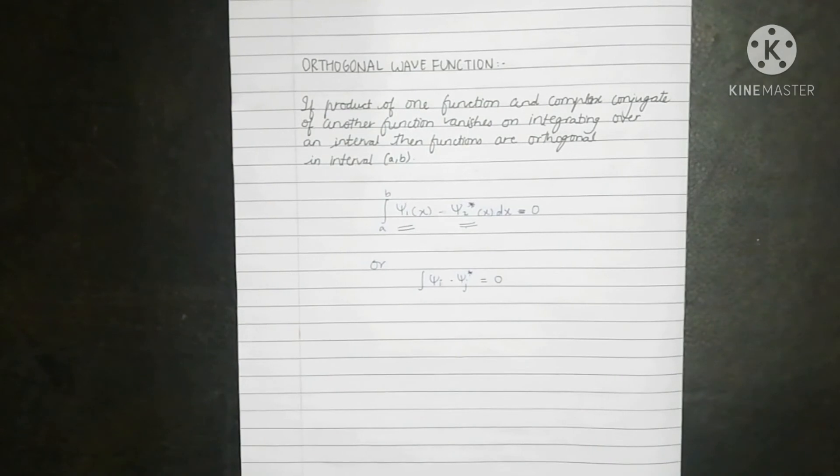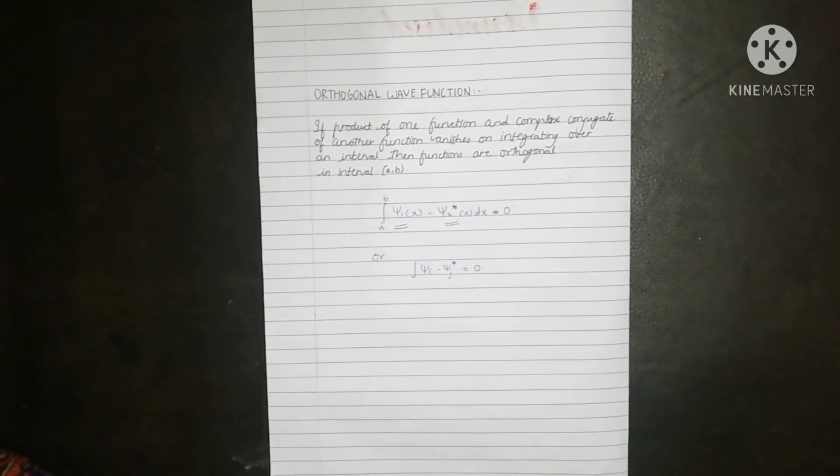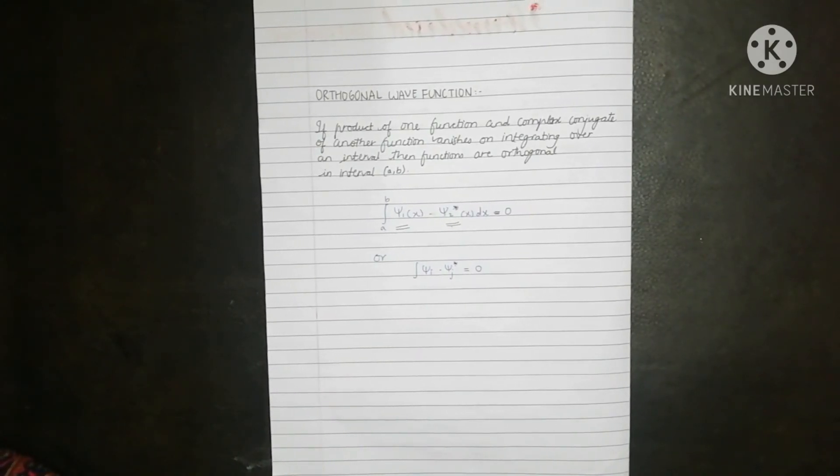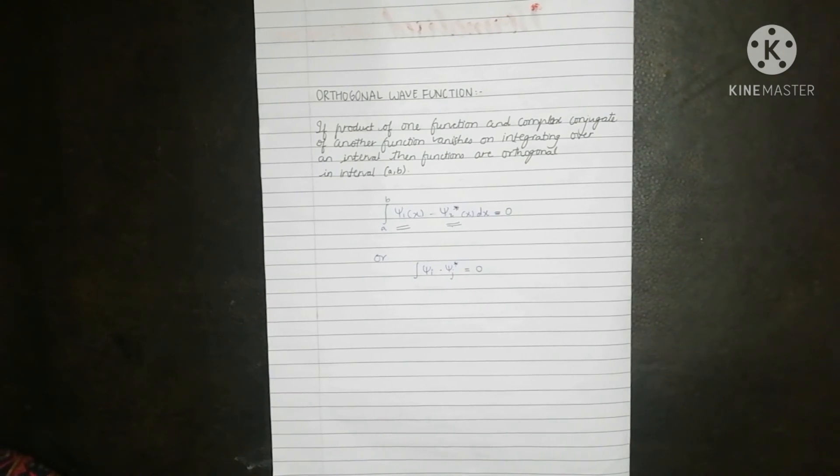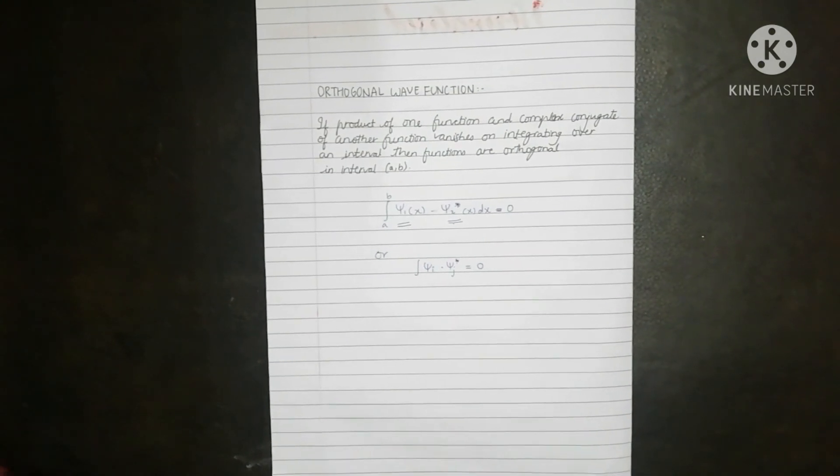The wave functions that are solutions of Schrodinger equation are mostly orthogonal to each other. Also, the wave functions that are both orthogonal and normalized are called as orthonormal wave functions. Hope you understood the difference between orthogonal and normalized wave function. Thank you so much for watching.